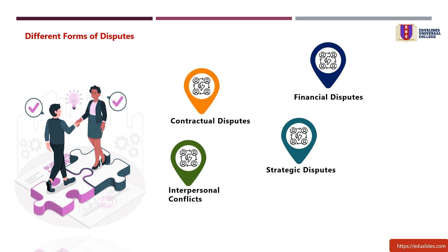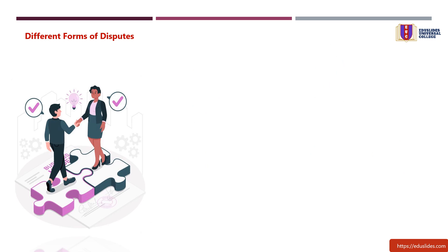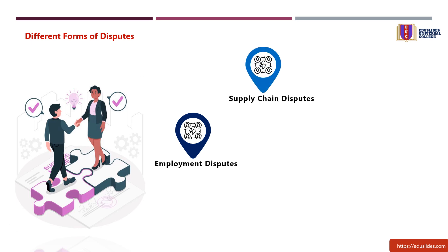Four: strategic disputes — conflicts regarding the direction, goals, or strategic decisions of a business or department. Five: intellectual property disputes — conflicts related to intellectual property rights, patents, trademarks, or copyrights. Six: employment disputes — conflicts arising from employment-related issues, including disputes with employees, managers, or HR matters.